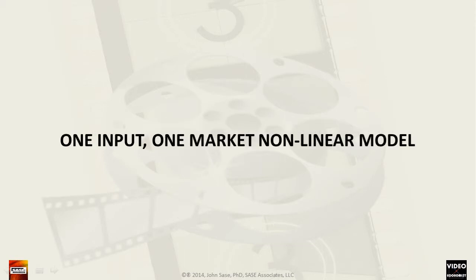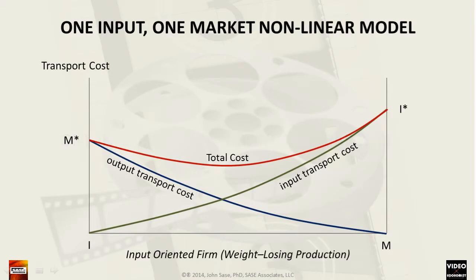In this video we will develop a one input, one market, mill-to-port non-linear model. By defining and summing input transport cost and output transport cost to get total cost, we will determine the optimal production location at either the input location I, the market location M, or at some point in between.